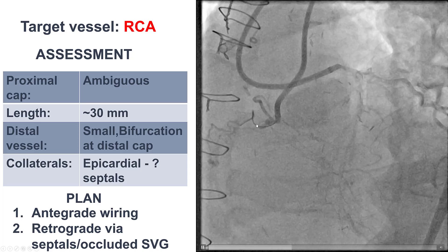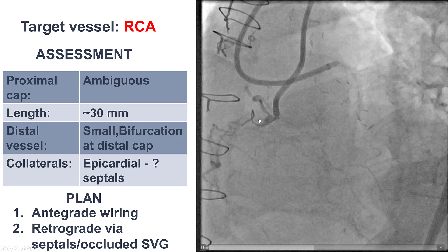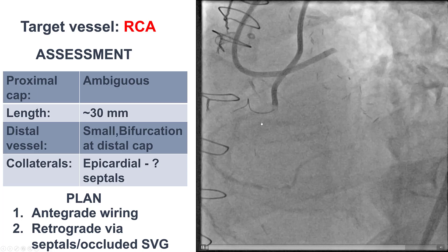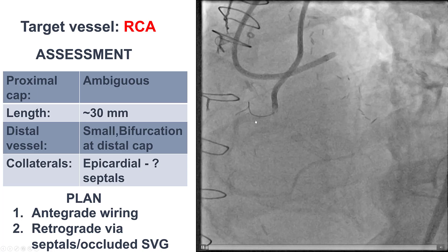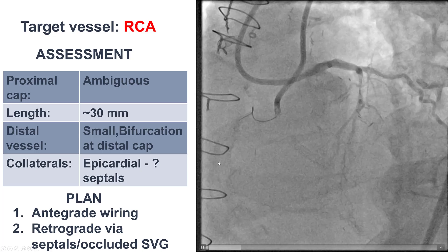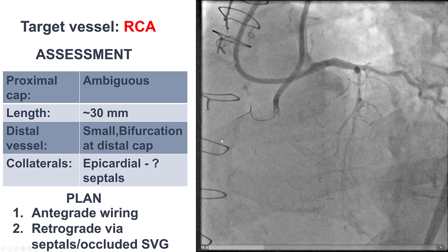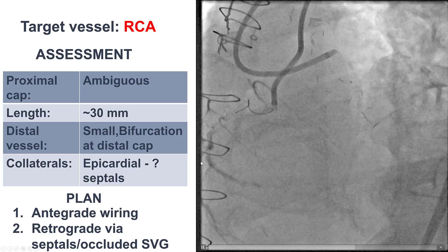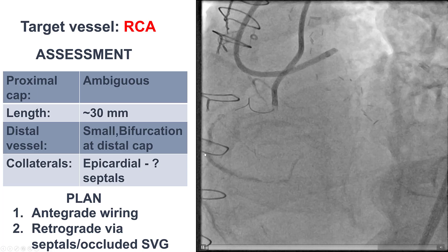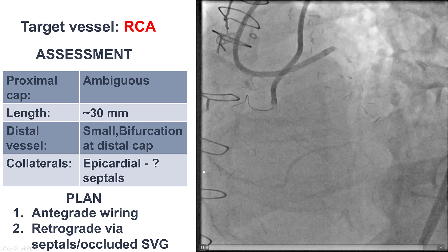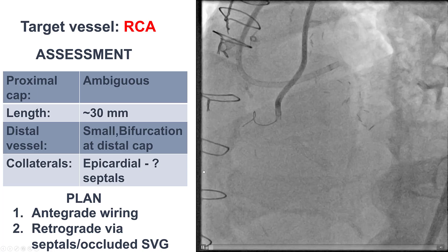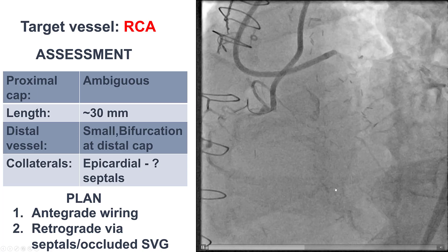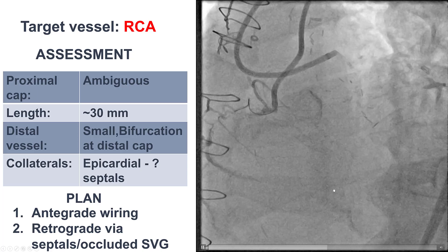So we have a CTO with heavy calcification. There is an ambiguous proximal cap. The length is about 30 millimeters. The distal vessel had a bifurcation on the distal cap with this large acute marginal branch, which was part of the ipsilateral collateral network. Collaterals were both ipsilateral as well as contralateral from the LAD.